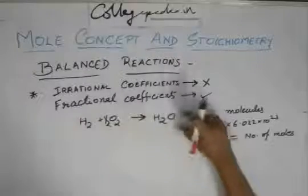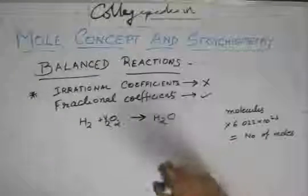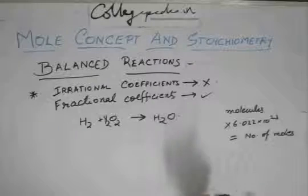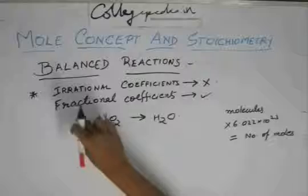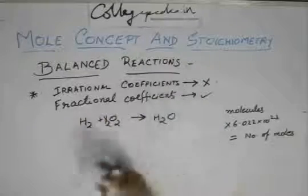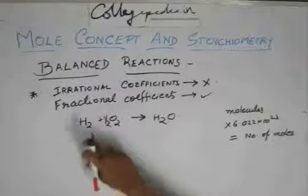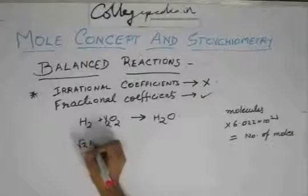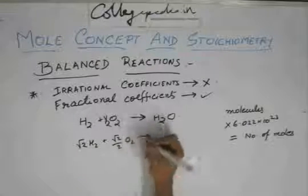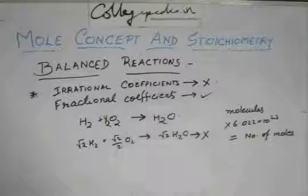If you are thinking in terms of molecules, just multiply by Na and you get the reaction in moles terms. We would rather use moles than molecules while balancing reactions. When we say H2 plus half O2 gives H2O, rather than saying a molecule of H2 reacts with half a molecule of O2, we consider one mole of H2 reacts with half a mole of O2 to give one mole of H2O. However, root 2 H2O plus root 2 by 2 O2 gives root 2 H2O is not allowed, because although the ratio is the same, you can't have root 2 moles of H2O — they are irrational.